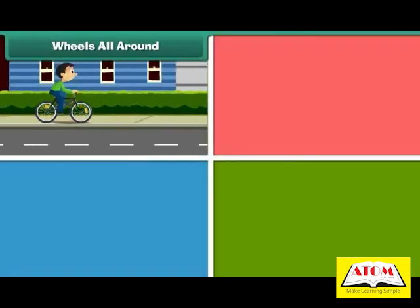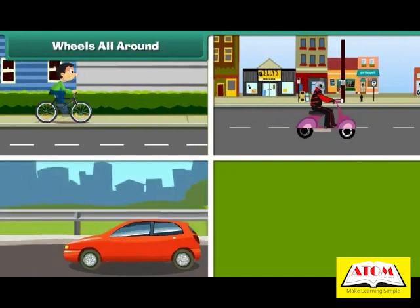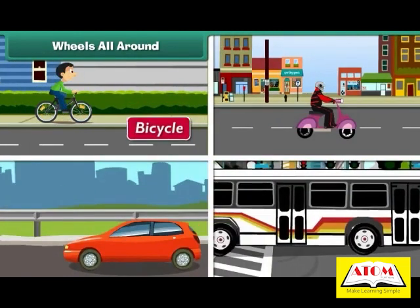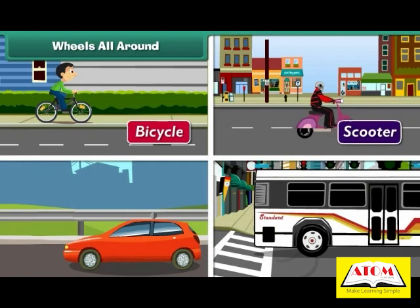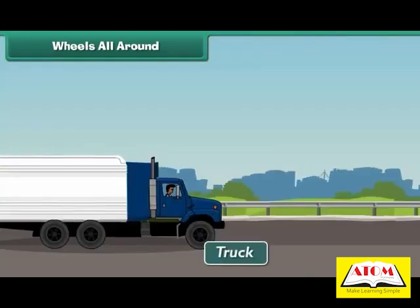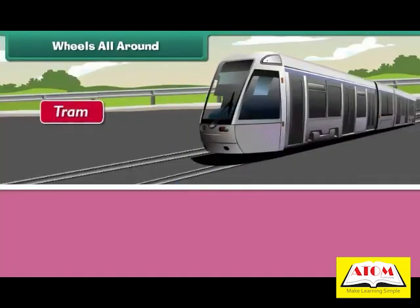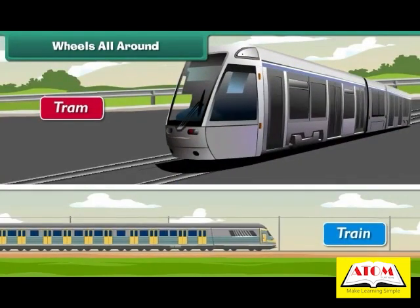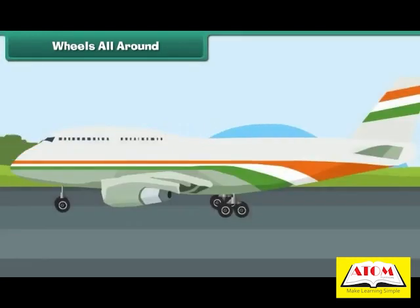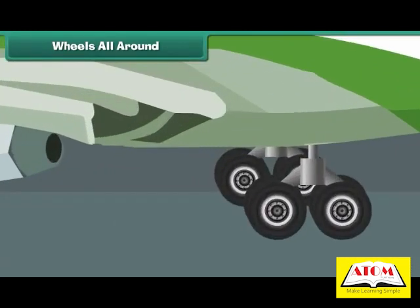All vehicles that move on roads and rails, such as bicycles, scooters, cars, buses, trucks, trams and trains have wheels. Aeroplanes also have wheels because they move on road first before taking off.